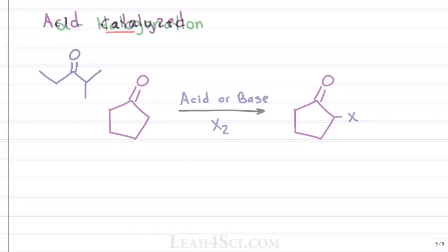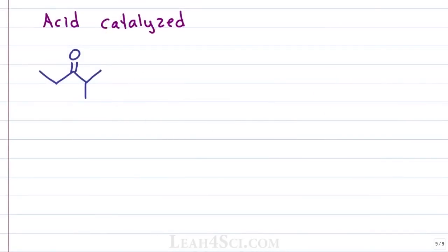We'll start with the acid catalyzed alpha halogenation. You can use any acid catalyst that when reacted with water will give you H+ or H3O+.